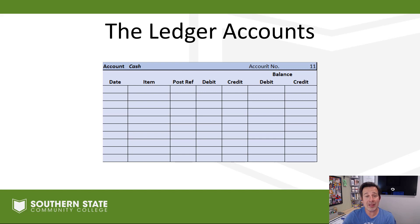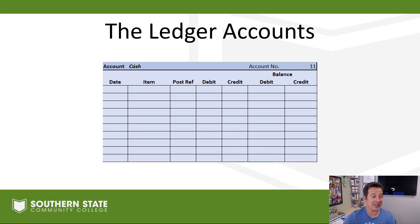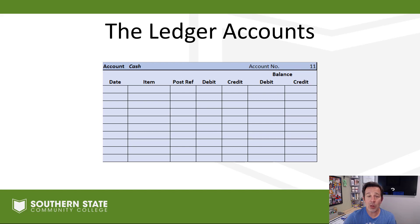Second part, we're going to take our transactions and post them over to our ledger accounts — we've seen ledger accounts already in our last video. We have a ledger account for every account in the accounting system. As you can see here with a cash ledger account, we have an account number, the date of the transaction, a posting reference showing where it came from in the journal, and the debit or credit for the transaction.